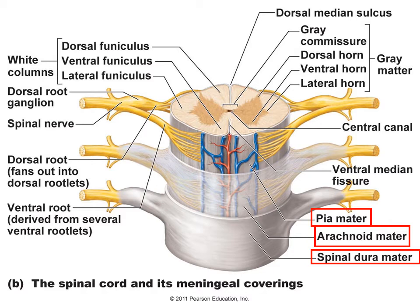Within the gray matter, the sections are divided into what we call horns, named by location: the dorsal horn, ventral horn, and lateral horn — true on each side. The gray commissure is the area where gray matter passes by the central canal, connecting one side with the other. For the white matter, it can be called either columns or funiculi — you can use either term — and once again named by location: dorsal, ventral, or lateral column or funiculus.